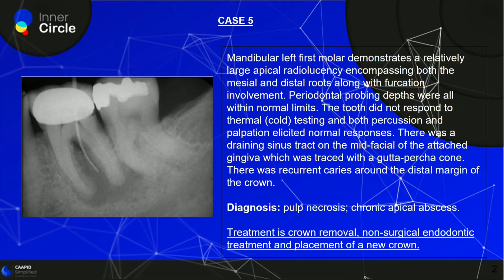An important point: anytime an abscess is confirmed, it will always have a pulp necrosis situation. The statement about normal periodontal probing depths is important because this radiographic appearance can also be caused by periodontal disease, so that has to be ruled out. Treatment here is crown removal, non-surgical endodontic treatment, and placement of a new crown. Because it's a PFM crown, it is generally difficult to gain access through it, so the crown typically needs to be removed before root canal treatment.